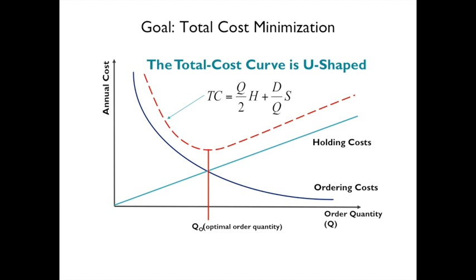Total cost minimization involves balancing ordering costs and holding costs. You can calculate both and aim to minimize them. Sometimes ordering a full shipping container or a full truckload gives you better discounts — or getting a pallet instead of a box. The tradeoff is between how much it costs to store it versus how much you save by ordering in larger quantities.